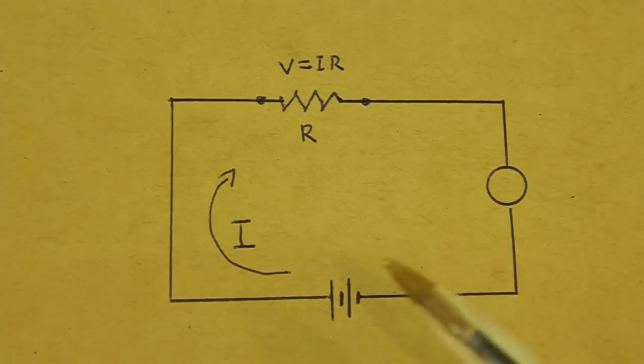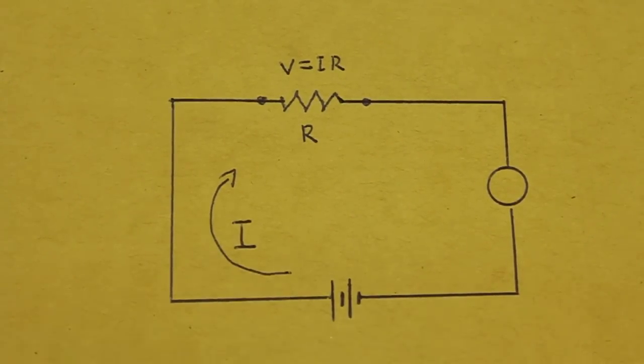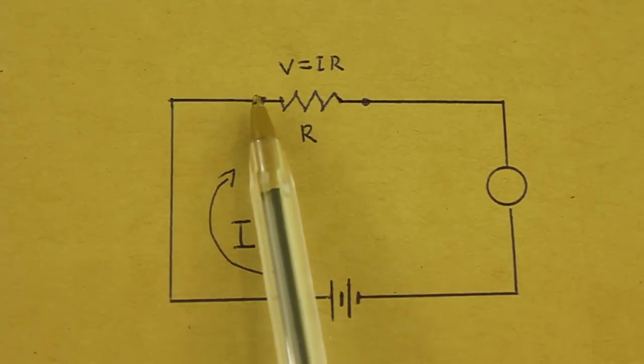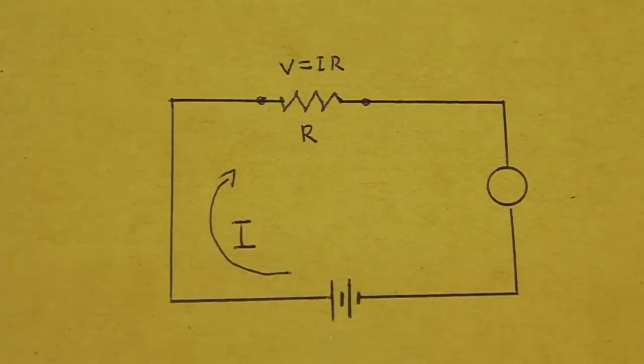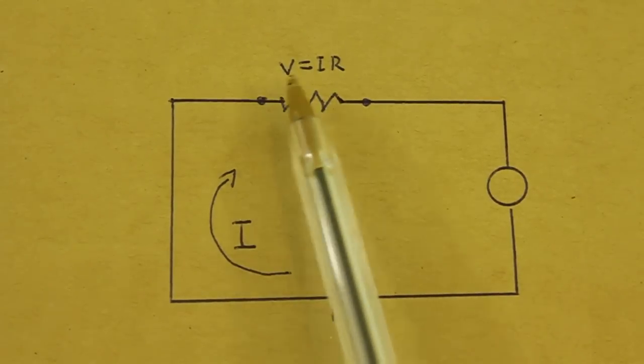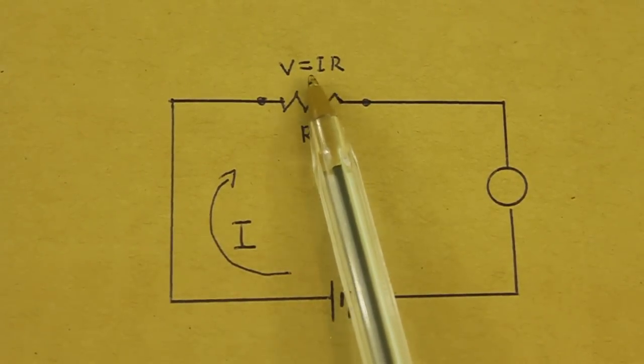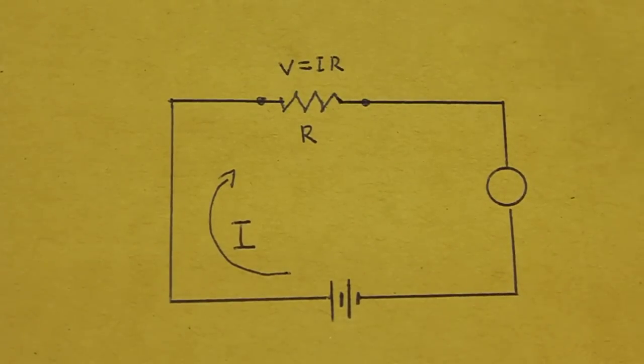Through the circuit we have a current I and we know from Ohm's law that if we measure the voltage at the resistor's terminals we will get a value that is the current through the circuit multiplied by the value of the resistor.